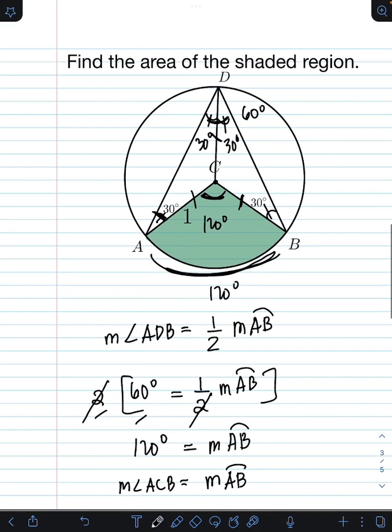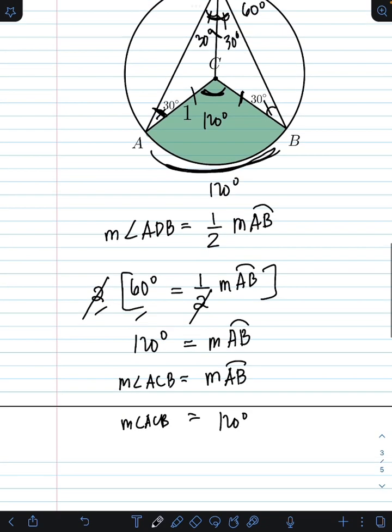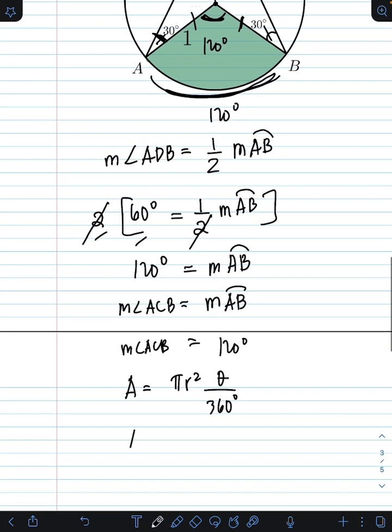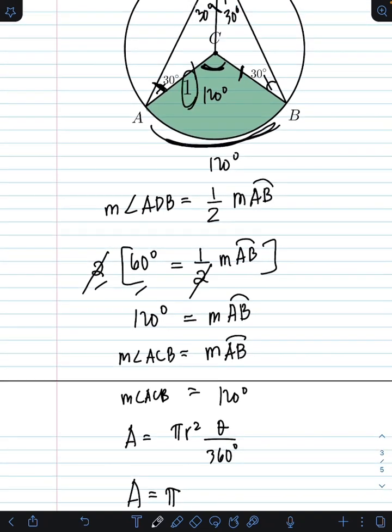Now that we have the central angle ACB, which is 120 degrees, we can now find the area of the sector ACB. The formula is area is equal to pi R square times theta over 360 degrees, where theta is the central angle ACB, which is already found as 120 degrees. So substituting the values, we have area of the sector is pi times R square. We know that the radius of the circle is 1 unit.